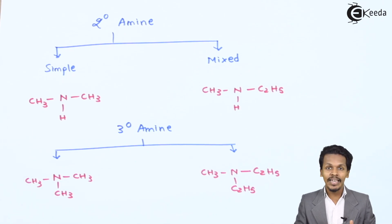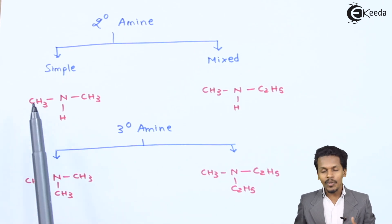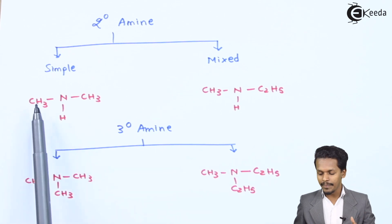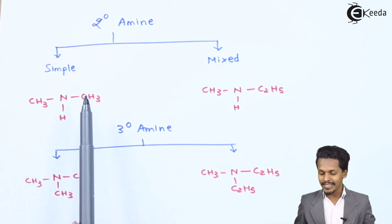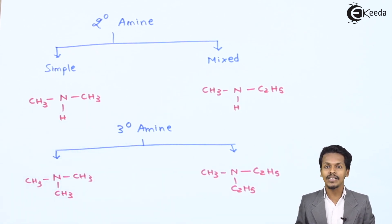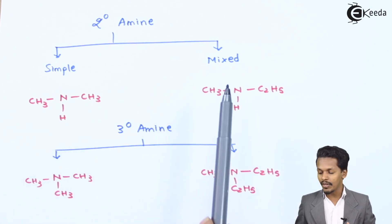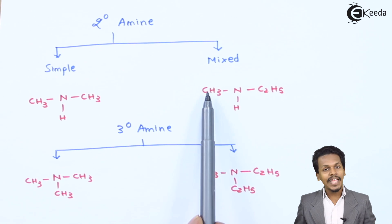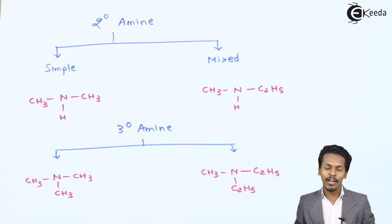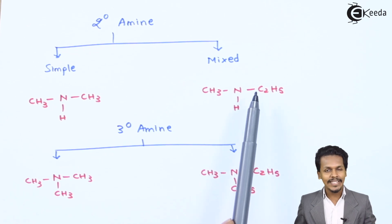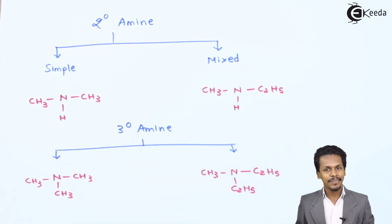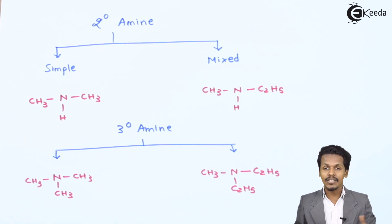Let me give an example with common names. For the simple secondary amine with two methyl groups, the name is dimethylamine. For the mixed secondary amine with a methyl group and an ethyl group, ethyl comes first alphabetically, so the name is ethylmethylamine. This covers the classification of secondary amines.